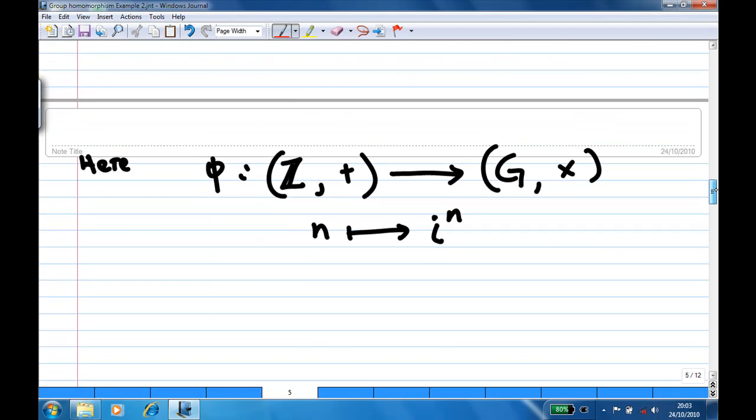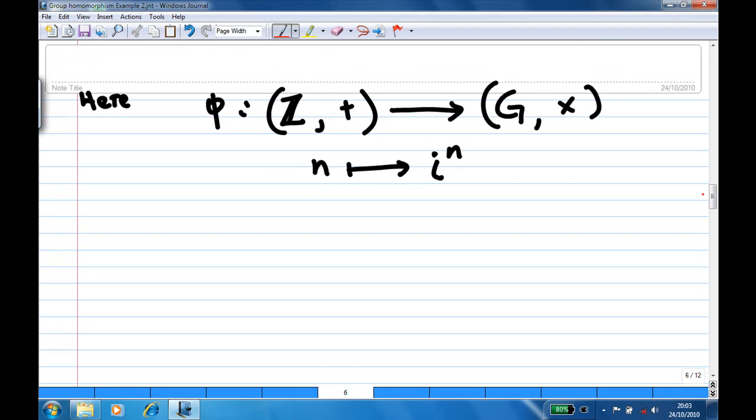In our case, the mapping from the additive group of integers to G consists of {1, -1, i, -i}. In this case, since this is a multiplicative group, the identity e' is equal to 1.